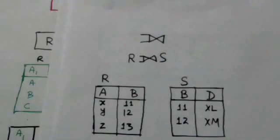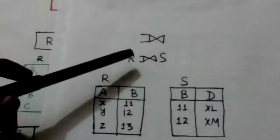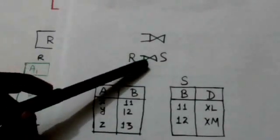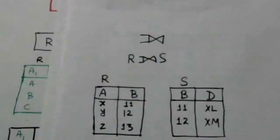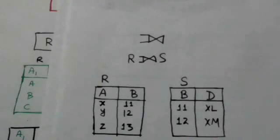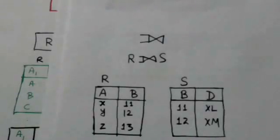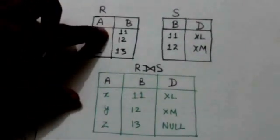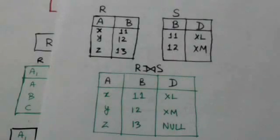In this tutorial we will study about the left outer join operation. The left outer join operation is denoted by this symbol. The result of this left outer join operation will have every tuple of the left relation R. If a tuple of relation R doesn't have any matching tuple in relation S, then the attributes of relation S in the resulting relation will be padded or filled with null values.